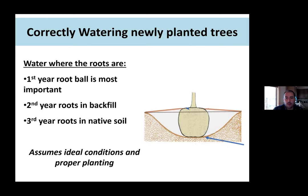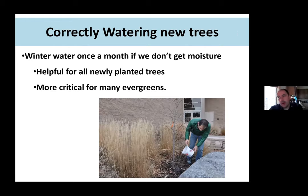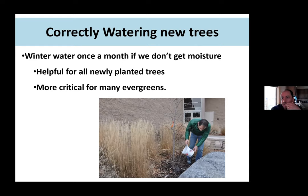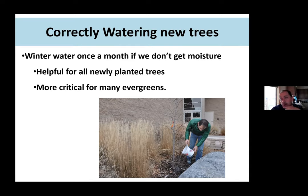For new trees, winter watering can be very important, especially if we have a dry winter. It's helpful to winter water all newly planted trees once a month if we don't get about one inch of precipitation — not one inch of snow, but one inch of moisture. Check your local weather station for data. This can be critical for evergreens, since they're potentially losing more water through their needles all winter. All newly planted trees will benefit from some winter watering.